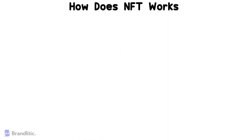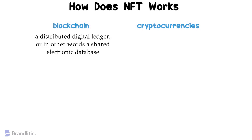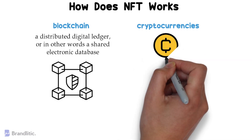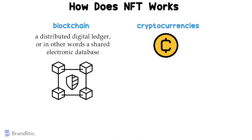To put it simply, an NFT relies on two pieces of technology: blockchain and cryptocurrencies. Blockchain, as we all know, is a distributed digital ledger, or in other words, a shared electronic database. And you need cryptocurrencies to buy NFTs. The most common one used here is called Ether, which uses the Ethereum blockchain. However, there are other digital currencies on different blockchains that can be used as well, depending on where you plan to purchase your NFT or what your operating platform is.